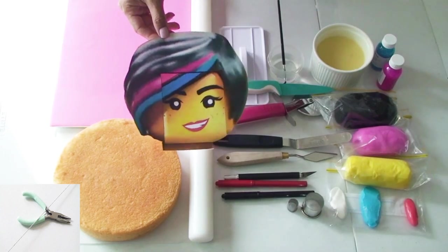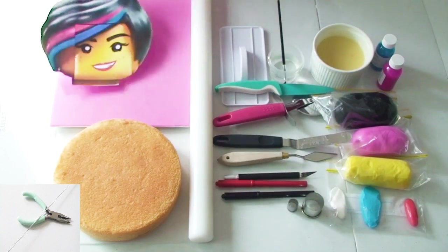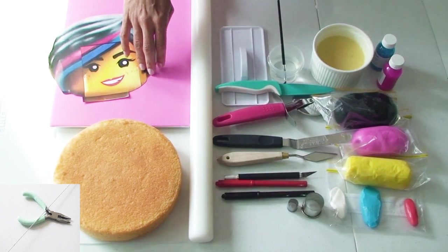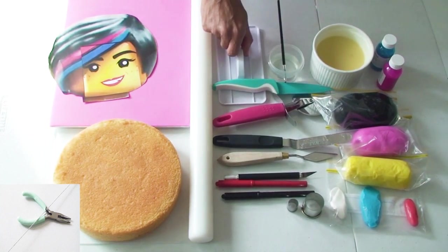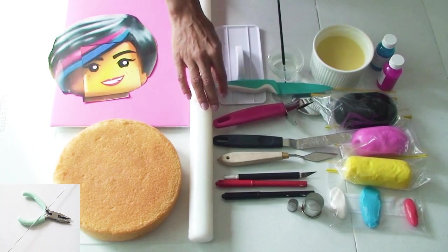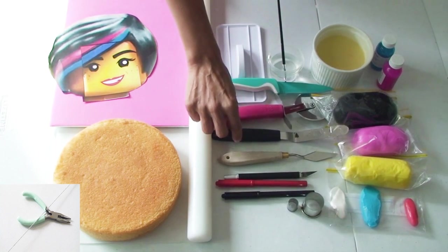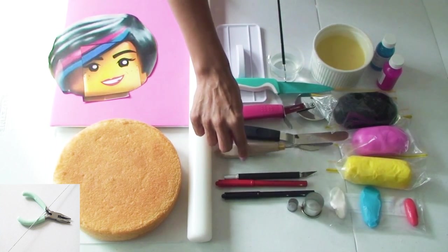So I'm using this template today of Wildstyle and you can get a copy of this in the description box below. I've got a board which I've covered, an eight inch round cake, my fondant roller, a cake smoother, a sharp knife, my pizza cutter, an offset spatula, a small palette knife, and my exacto blade.